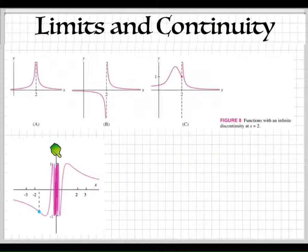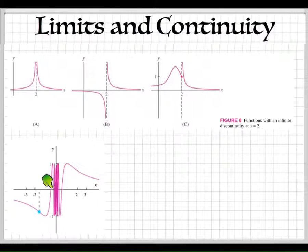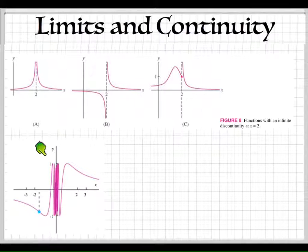Then we have the oscillating one. The oscillating one is discontinuous because when you get closer and closer to 0, the line just starts jumping back and forth. It doesn't connect anymore.